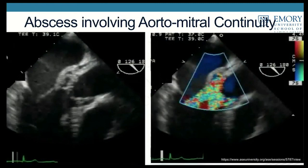Things to look for on echo when assessing for abscess include thickening of the annulus, and you can see the abscess cavity filling with regurgitant volume. This is suggestive of an abscess involving the aortomitral continuity, which implies a two-valve problem and increased morbidity and mortality.